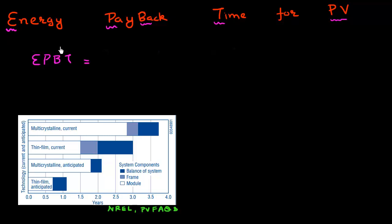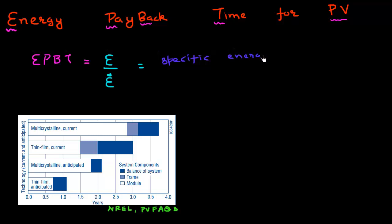The energy payback time is essentially equal to the amount of energy which was required to make the solar cells, divided by the rate at which the solar cell or module is producing this energy. I can also write this as the specific energy of my solar module, divided by the rate at which my solar module is generating electricity.